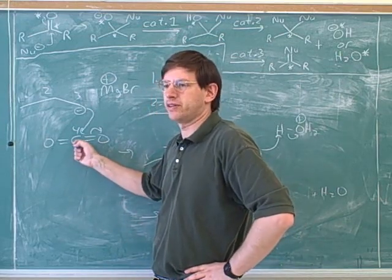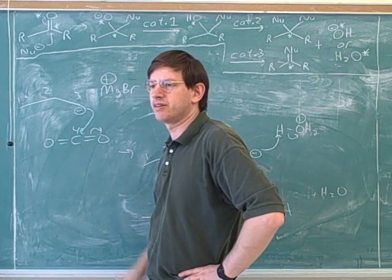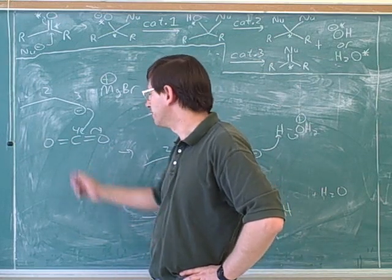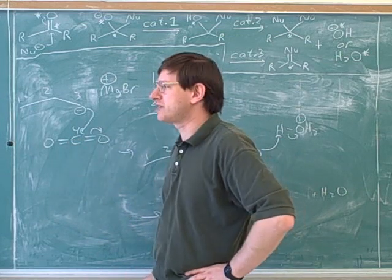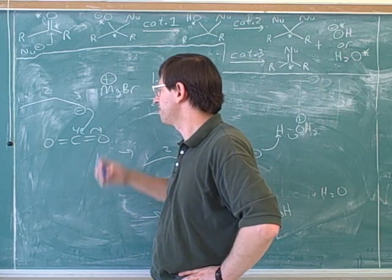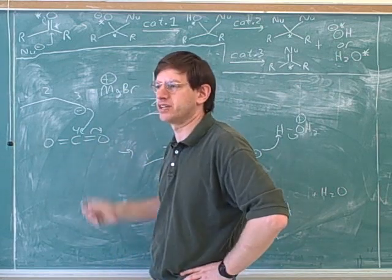besides the delta positive. Because if you do resonance structuring, move it over, then that's going to happen. A full positive charge. So now, besides looking for the delta positives based on electronegativity, we have another way of predicting electrophiles, which is thinking about different resonance structures.